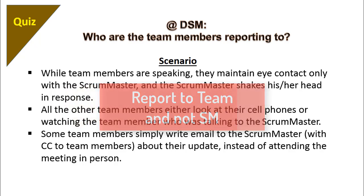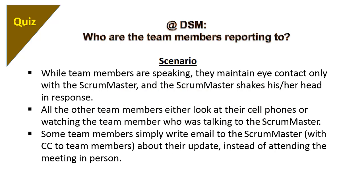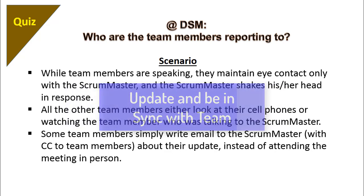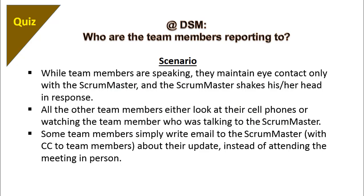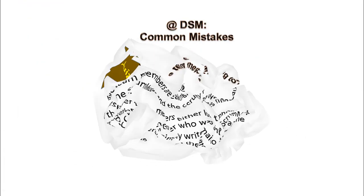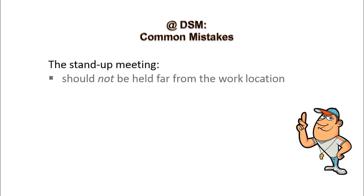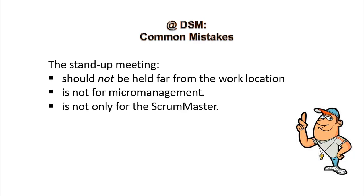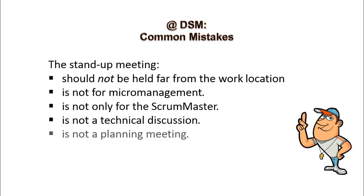The team members should not be reporting to the scrum master. They are supposed to report to the team. At DSM, the team gets to know what is happening in the project. They get to know about other information like visitors, impediments being solved, or if there is any new employee joining the team. The idea is to keep everybody in sync about the progress. The scrum master facilitates and ensures that the meeting finishes on time. The meeting should not be held far from the workstation. This meeting is not for micro management, it is not only for the scrum master, it is not a technical discussion, and it is not a planning meeting.